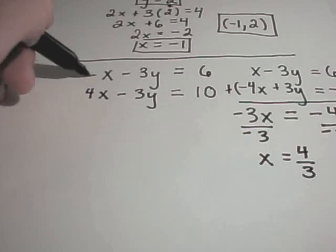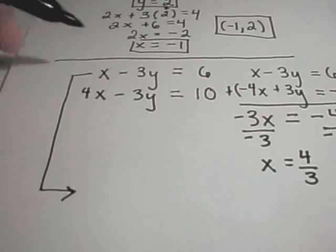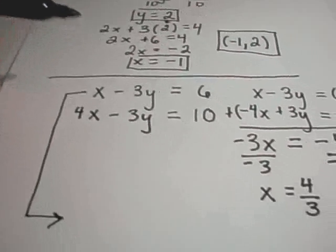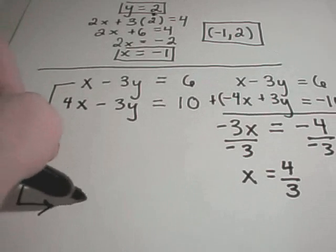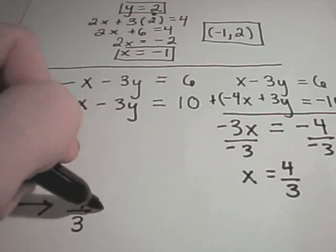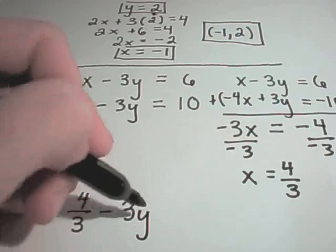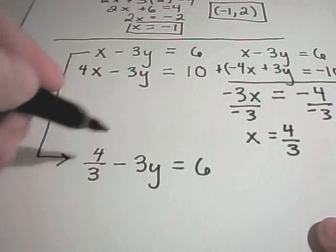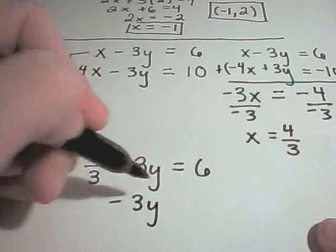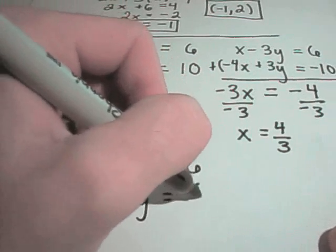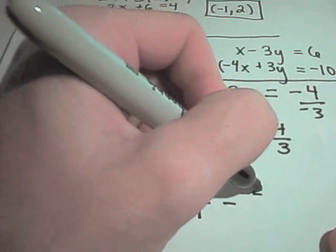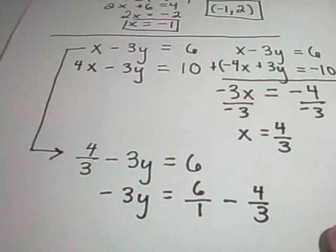Alright, so not a nice whole number, but who cares. So again, I'm now going to take my first equation. I usually just pick the one that has the smaller numbers floating around. I figured that's going to make my arithmetic easier. I'll plug 4 thirds in for x. Then I have minus 3y equals 6. So I have to subtract 4 thirds from both sides. So I'll get, I'm going to write 6 as 6 over 1. And then I bring over my minus 4 thirds.